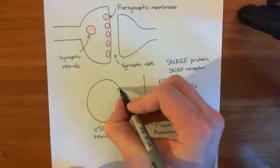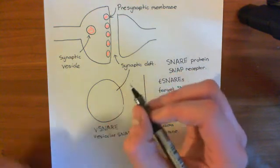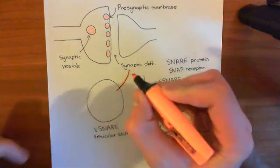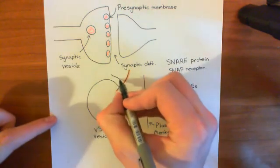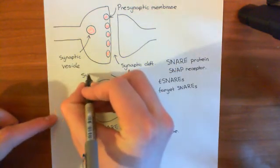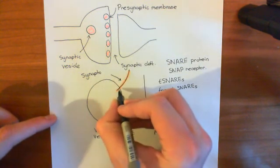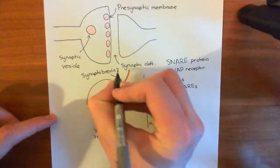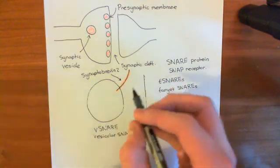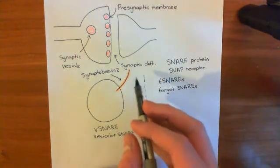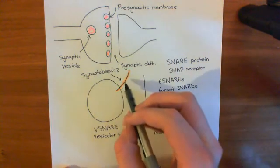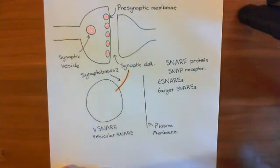The SNARE protein in the synaptic vesicle is known as synaptobrevin-2, coloured in orange here. It has a membrane-spanning alpha helix which anchors it in the membrane of the synaptic vesicle, and it also has a cytoplasmic alpha helix that is going to take part in the formation of the core SNARE complex. Synaptobrevin-2 is the major V-SNARE.